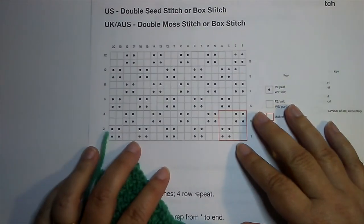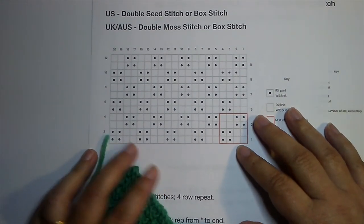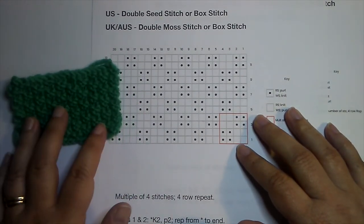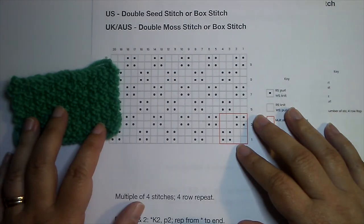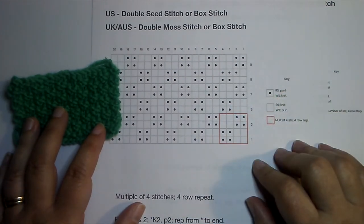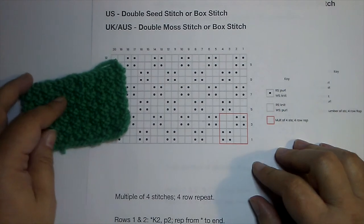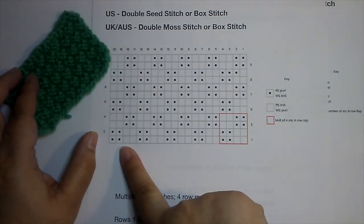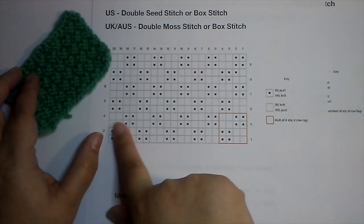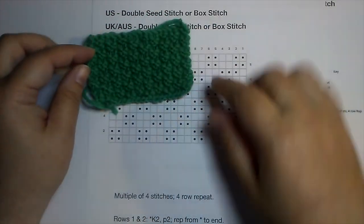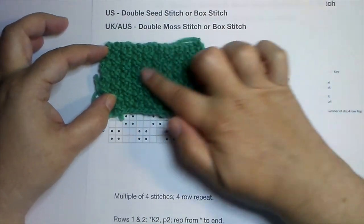In the US, it's called double seed stitch, or it's called box stitch. In the UK or Australia, it might be called double moss stitch, or it might be called box stitch. It's a knit two, purl two pattern for two rows, and then you break that pattern, and you purl two, knit two. And you get this small box pattern.